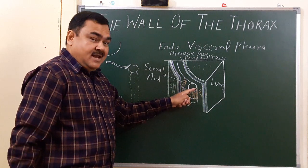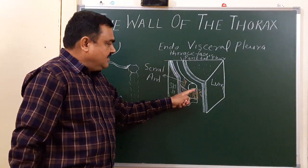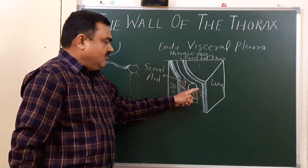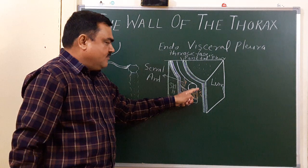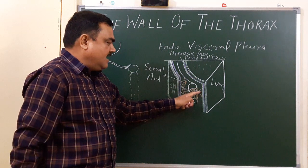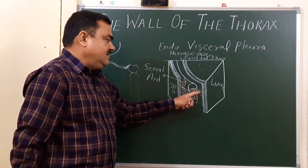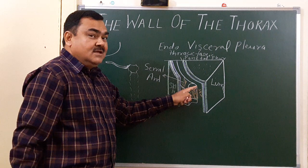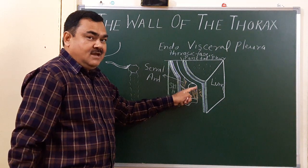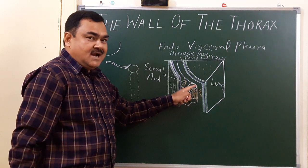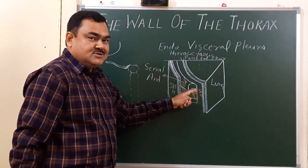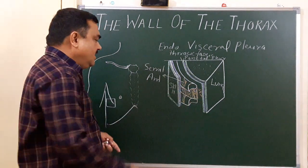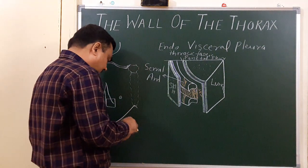Between the internal intercostal and transverse thoracic muscle there is a neurovascular bundle. The relation of the structures in the neurovascular bundle: vein is uppermost, then artery, then nerve. These are the intercostal vein, intercostal artery, and intercostal nerves.